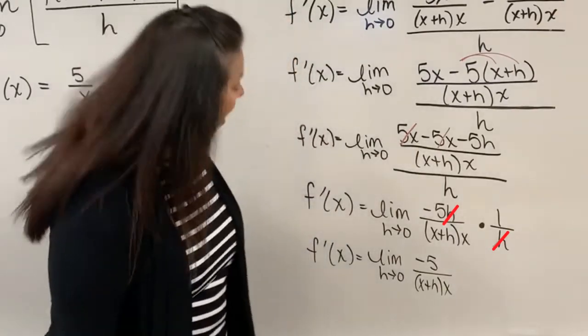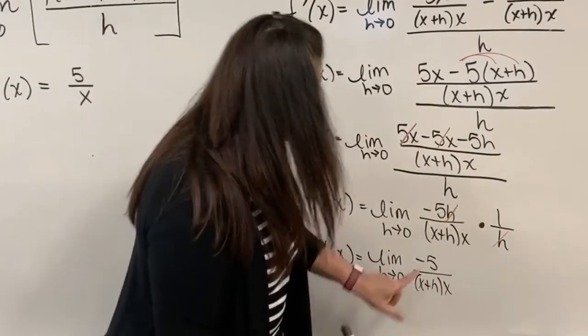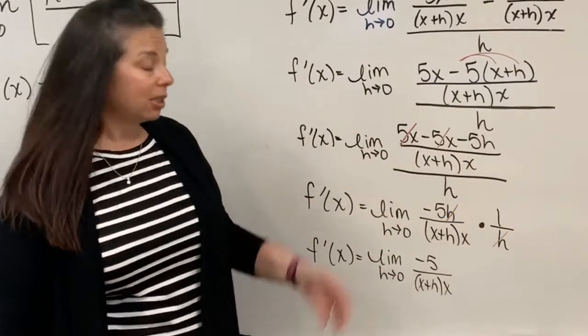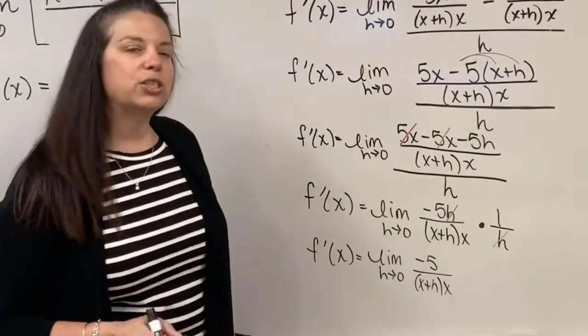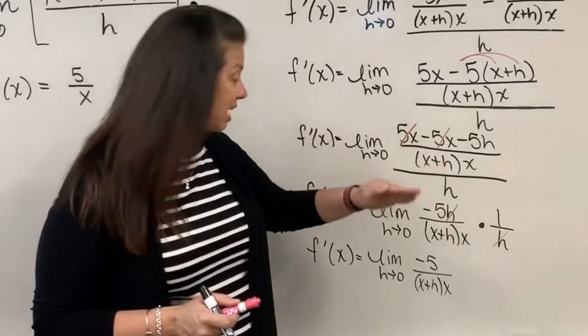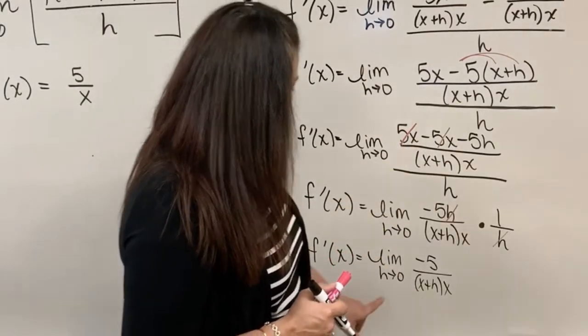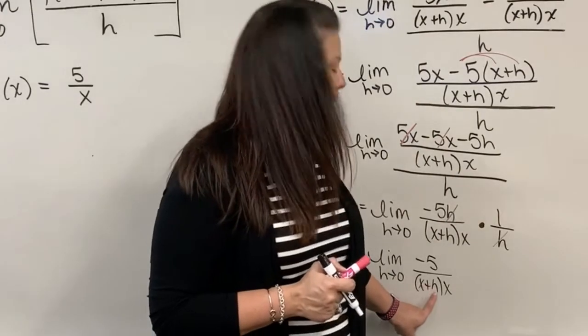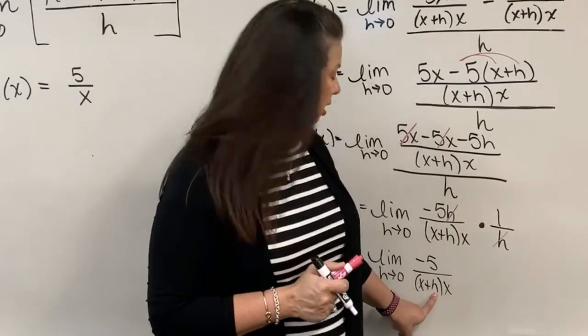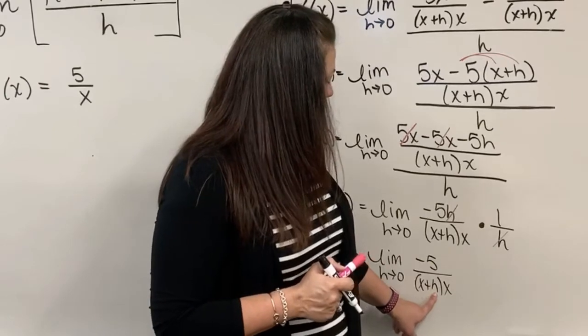Not quite done yet because I still have not dealt with my limit notation, actually taking the limit as h approaches 0, but now I'm ready to do that. Always in the last step we will handle that. And so now we think, let's actually let h be 0. There's only one place that we have an h. Let's let it be 0. And when we do, well, I still have a numerator of negative 5.